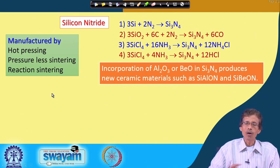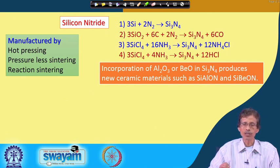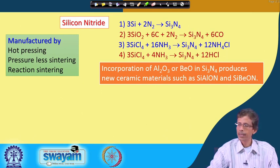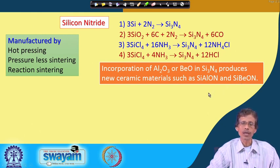In all these materials, oxide components can also be incorporated. The incorporation of alumina and beryllium oxide into Si3N4 produces a new variety of ceramic material known as SIALON or SIBON, respectively. Further improvement of the quality of silicon nitride-based materials can thus be achieved by addition of oxides.